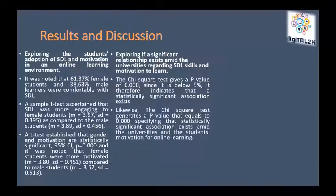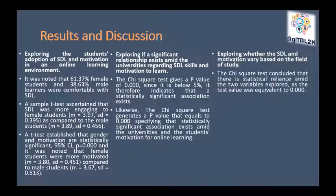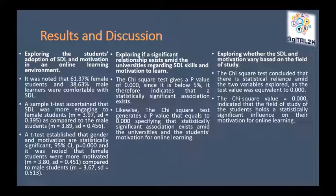Exploring whether a significant relationship exists among universities regarding SDL skills and motivation to learn, the chi-square test gives a p-value of 0.00, showing that a statistically significant association exists. Likewise, the chi-square test generates a p-value equal to 0.00, specifying that a statistically significant association exists between universities and students' motivation for online learning. It was concluded that there is statistically significant reliance between the two variables explored.